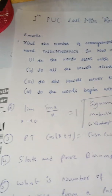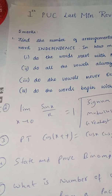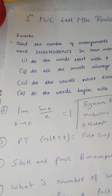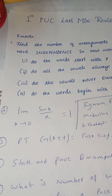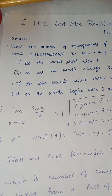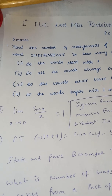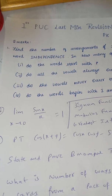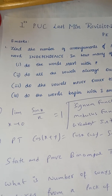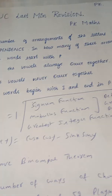The second question is in the limits chapter: the proof that limit x tends to 0 of sin x by x is equal to 1. This is a very important proof, also discussed in PK Maths channel in previous videos under first PUC Maths.